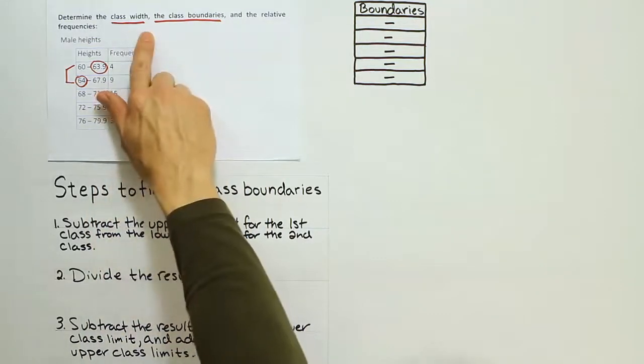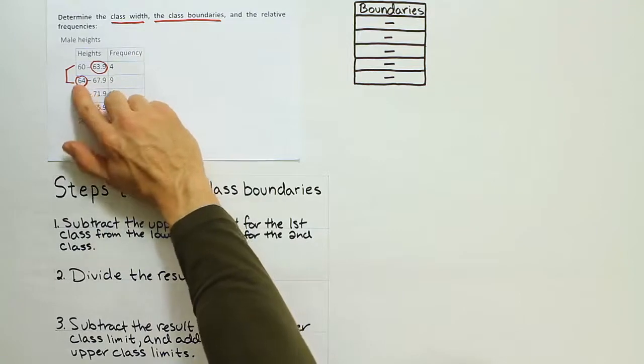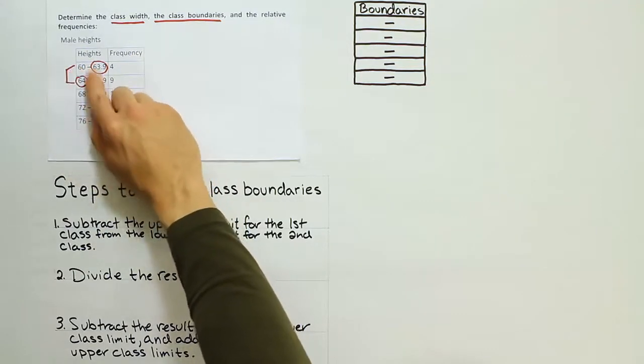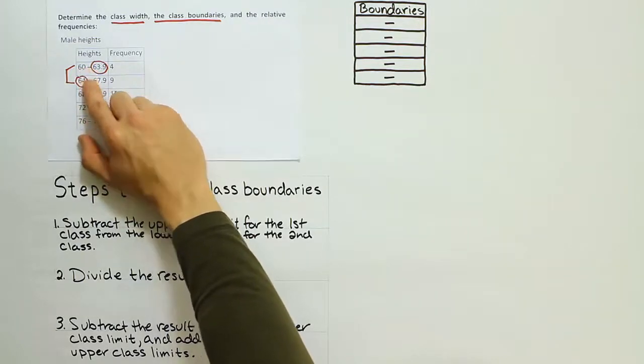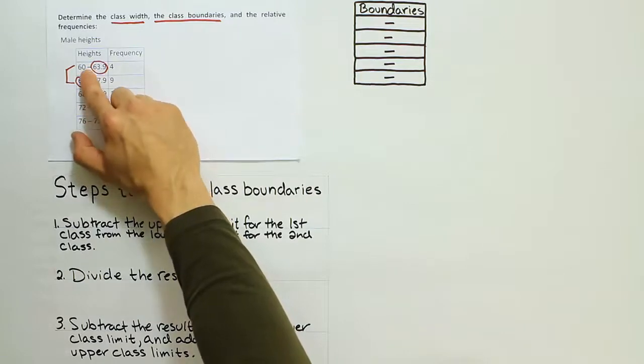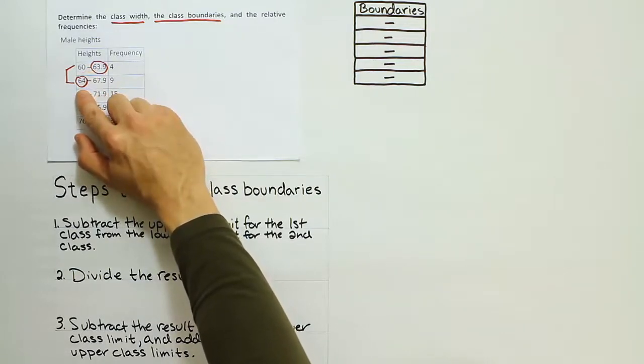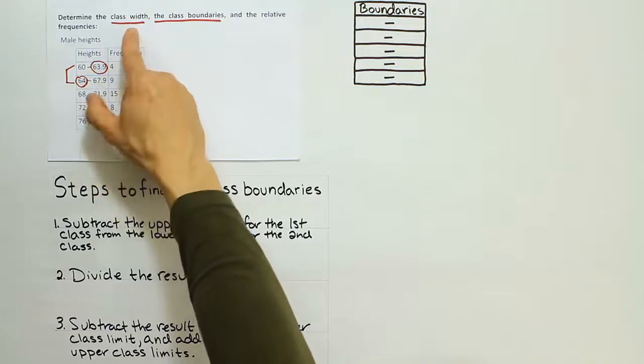The class width, the first part of the problem, is an easy part. I've joined these two numbers together to indicate how you do the calculation for the class width. All you have to do is to subtract 64 and 60. So if I take the number 64 and subtract off 60, I'll be left with the difference of 4. And that difference is the class width.